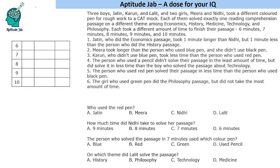So let us have a table like this. The first column is time, then we can arrange the person, the subject or passage, and the color of pen. That is what we need to fill.